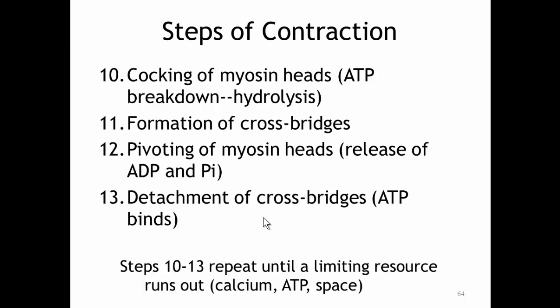These are the four steps of contraction, continuing off the previous numbering system. Step ten is called the cocking of the myosin head. Step eleven is the formation of cross bridges. Step twelve is the pivoting of the myosin head. And step thirteen is the detachment of the cross bridge. These are cyclic steps — they keep happening over and over again until we run out of a limiting resource like space, ATP, or calcium. Make sure you pay attention to what's happening to ATP, ADP, and inorganic phosphate in each of these steps.